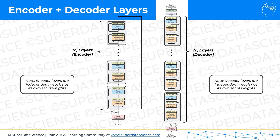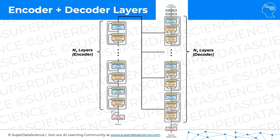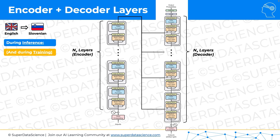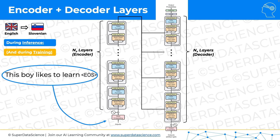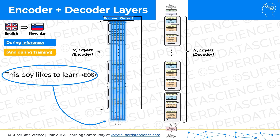That's what the architecture looks like from a bird's eye view. Let's look at a few vectors going through this architecture with an example of translation from English to Slovene during inference — the same principles apply during training. The sentence 'this boy likes to learn' with an end-of-sequence token goes into the encoder stack, through all the encoder layers sequentially. At the top we get the encoder output, and importantly this happens only once — the input isn't changing, so it saves computation by keeping that output and reusing it rather than regenerating it for every decoder step.